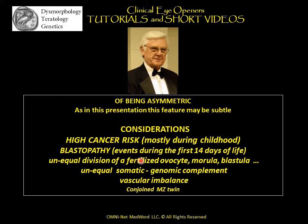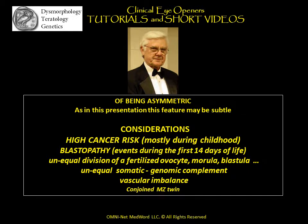The asymmetry may be the result of an unequal division of the fertilized oocyte, morula, and blastula; or of an unequal somatic genomic complement of the right and left components of the early embryo; or that it is the result of a vascular imbalance. Least likely perhaps, but nonetheless worth consideration, is that one body half and the other represent conjoint monozygotic twins — thus the same genomic complement, but in different proportions.